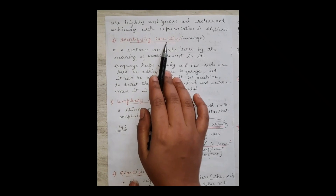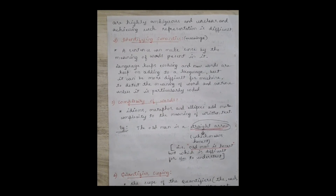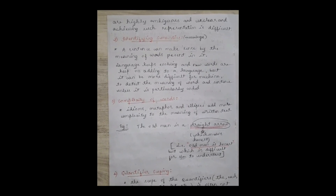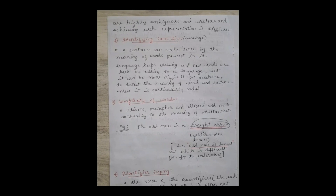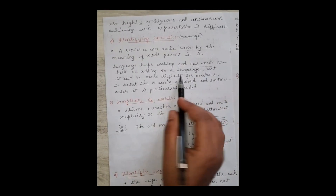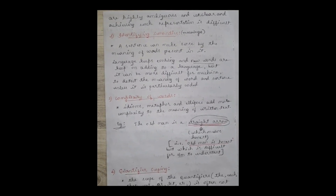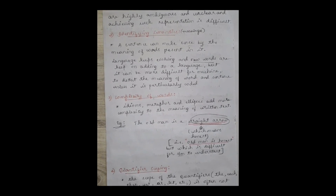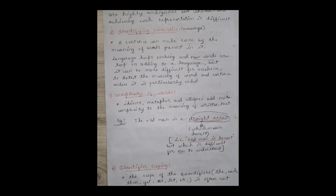The second challenge is identifying semantics. Semantics is basically the meaning — the machine needs to have knowledge of the meaning of words. Language evolves every day; new words are added constantly. If you develop a machine today and tomorrow a new word is added, the machine won't be able to understand it because that word is not in its coding. So identifying semantics, considering language evolution, is a major challenge.